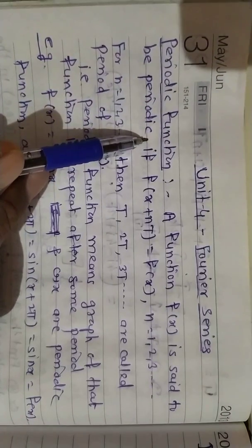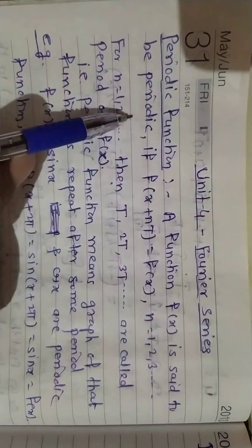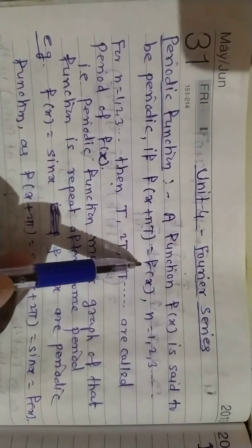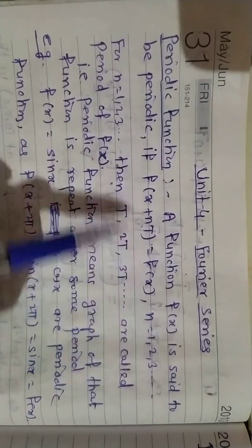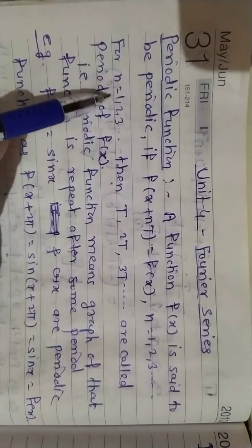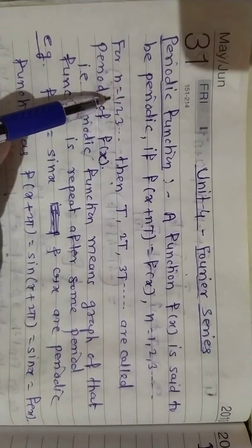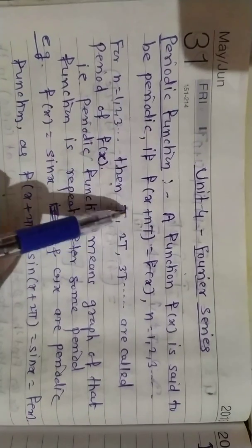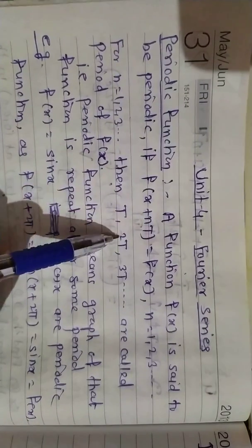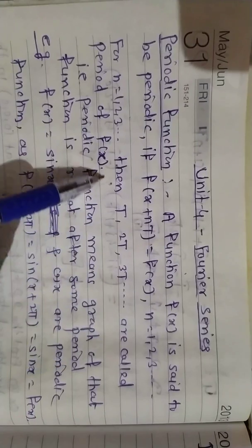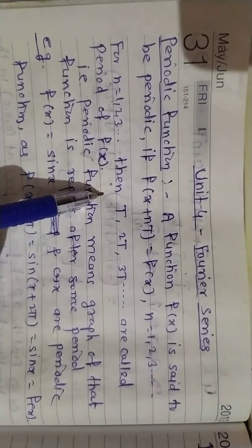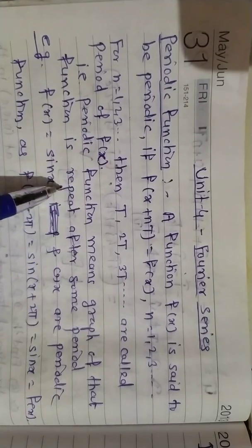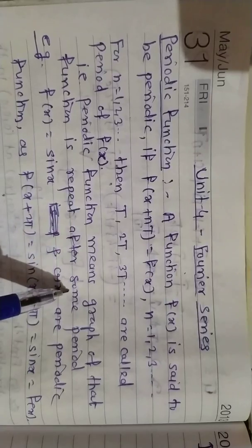A periodic function is a function f(x) said to be periodic if f(x + nT) = f(x), where n = 1, 2, 3, and so on. For n=1, 2, 3 the values T, 2T, 3T are called the periods of f(x). A periodic function means the graph of that function repeats after some intervals or after some periods.